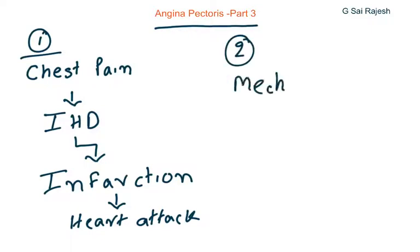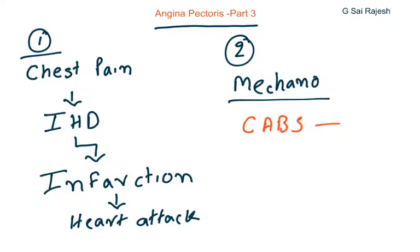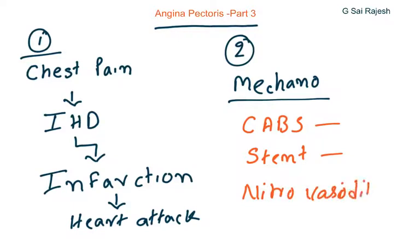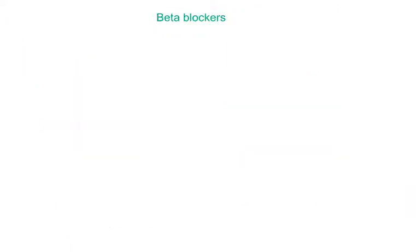In part 2 we saw mechanotherapy for angina pectoris — surgical intervention like coronary artery bypass surgery, how it is done, and how stents are placed along with angioplasty. Along with this we saw nitrovasodilators, their mechanism of action, pharmacology, and structures.